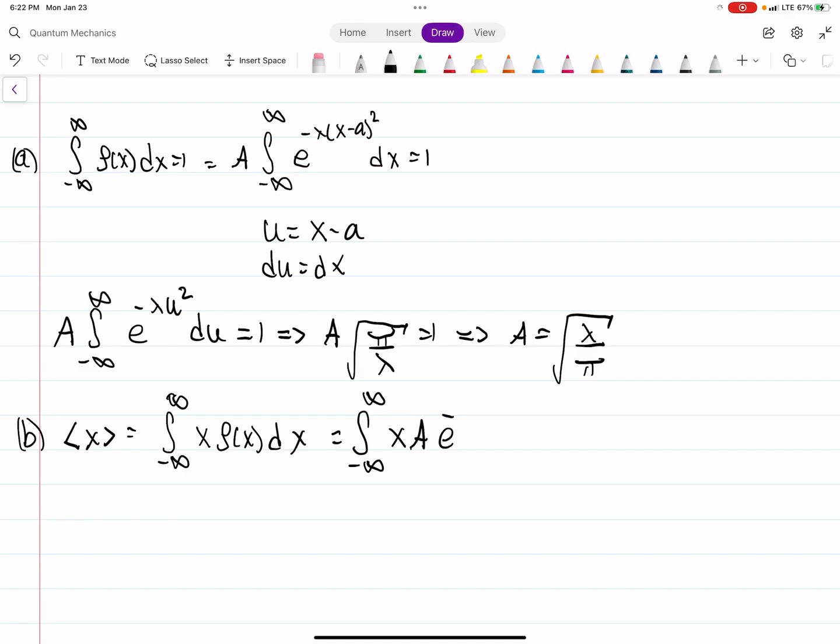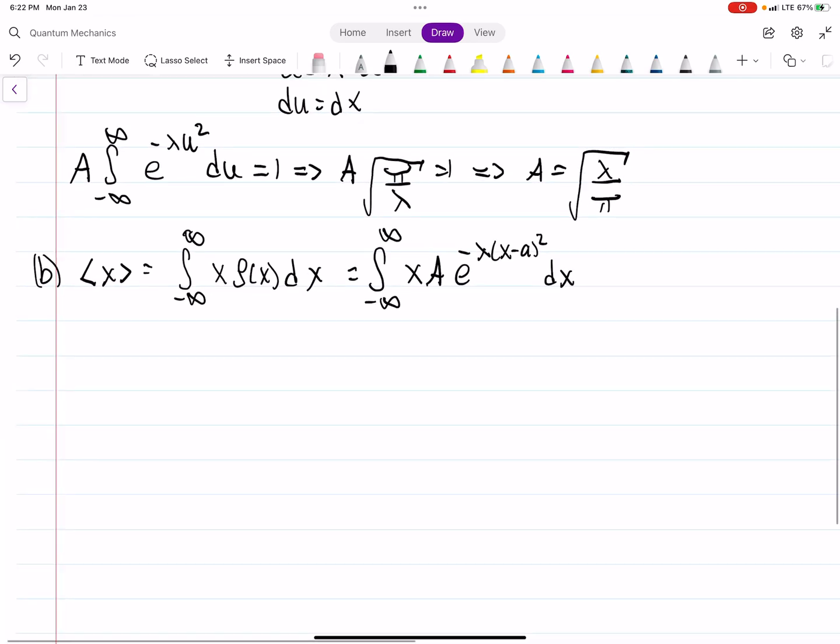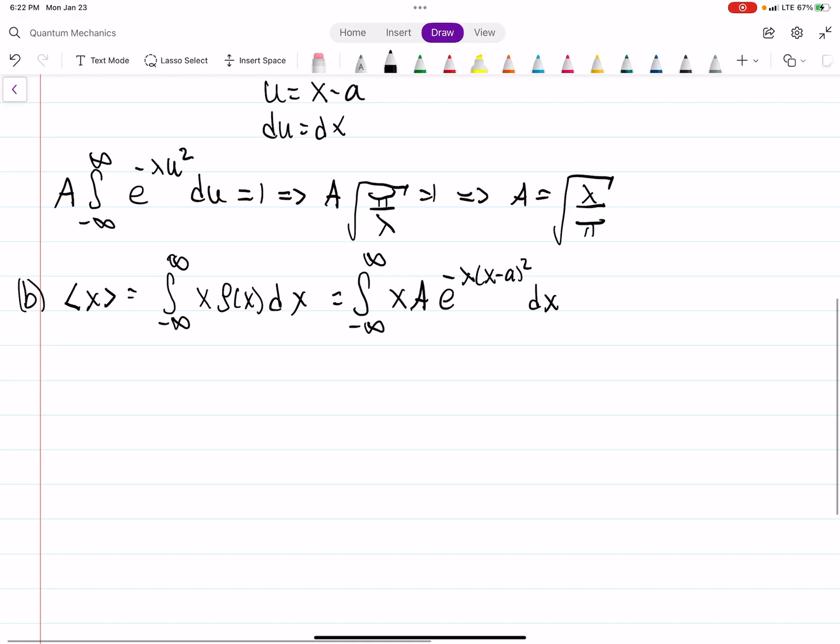So this is the integral from minus infinity to positive infinity, x, A, E to the minus lambda x minus A squared dx. And then, of course, what we can do here is we can factor out our A.